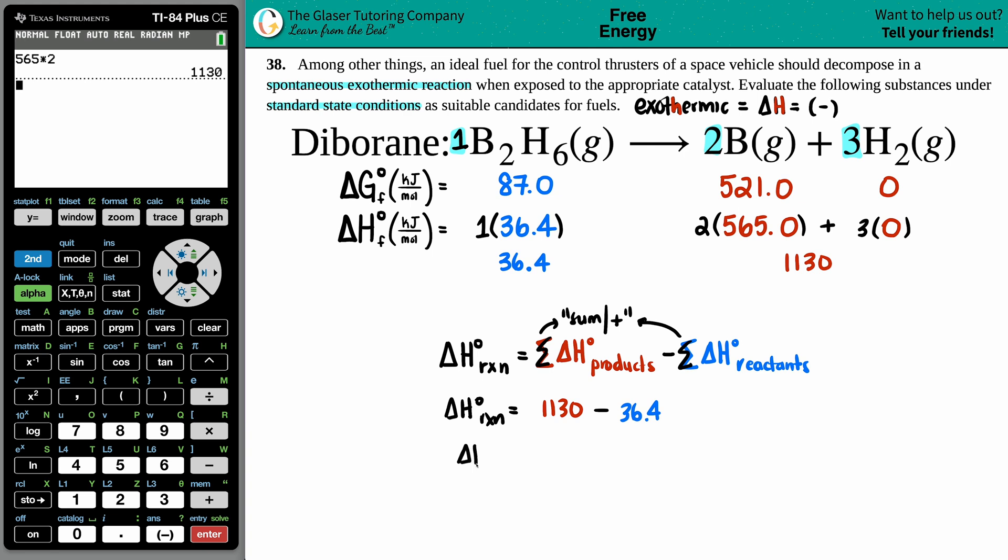Okay that doesn't look too good to me. If we take that value and I subtract it by 36.4, I get 1093.6 and that unit would be kilojoules.